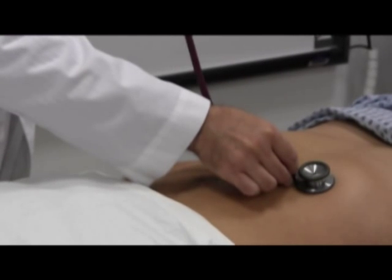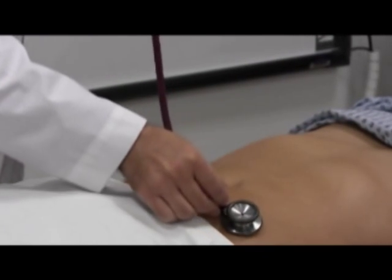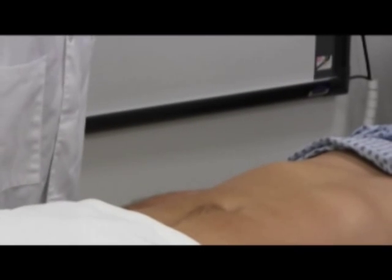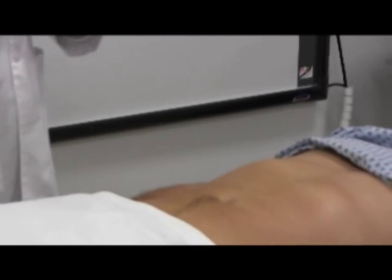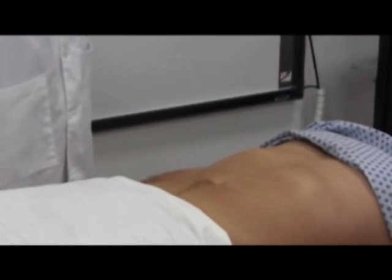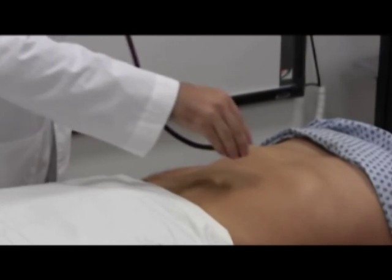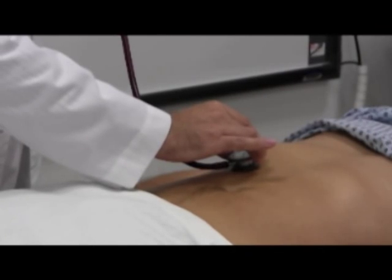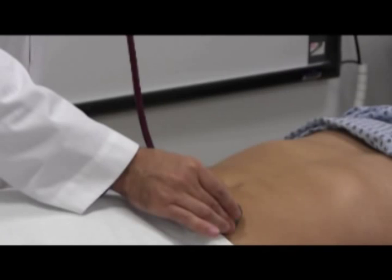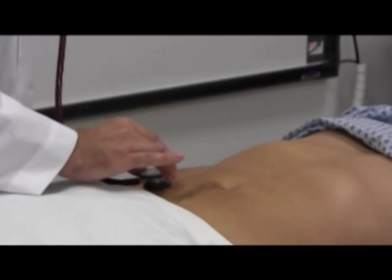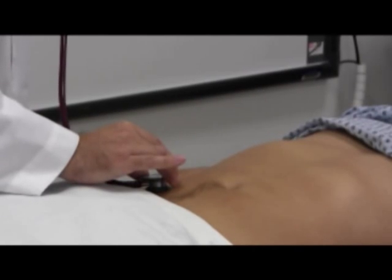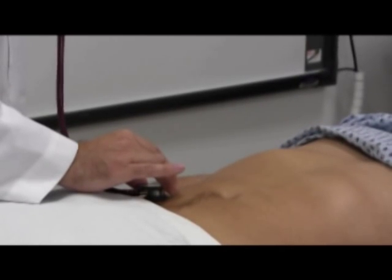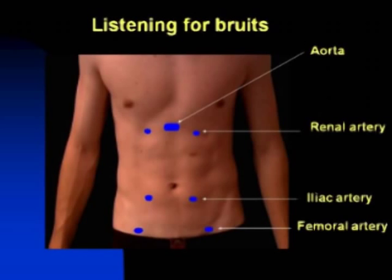If you do not hear any bowel sounds, you should check in other areas. Next, with the bell of your stethoscope, listen for bruits. Listen for an aortic bruit in the epigastrum above the umbilicus. Listen in both upper quadrants for renal bruits. Listen below the umbilicus on both sides for the iliac arteries. Auscultation for femoral bruits can be done now or later as part of a peripheral vascular exam. These are the spots you should listen for bruits.